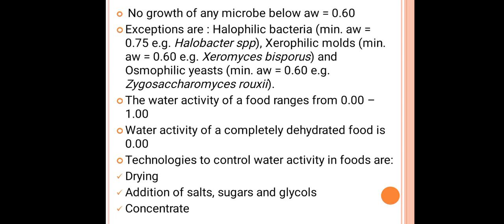Completely dehydrated food has a water activity of zero, meaning no microbial growth occurs — which is why dried food products have a maximum shelf life. Technologies used to control water activity include drying, addition of salts, sugars, and glycols (which reduce water activity), and concentration of food products.